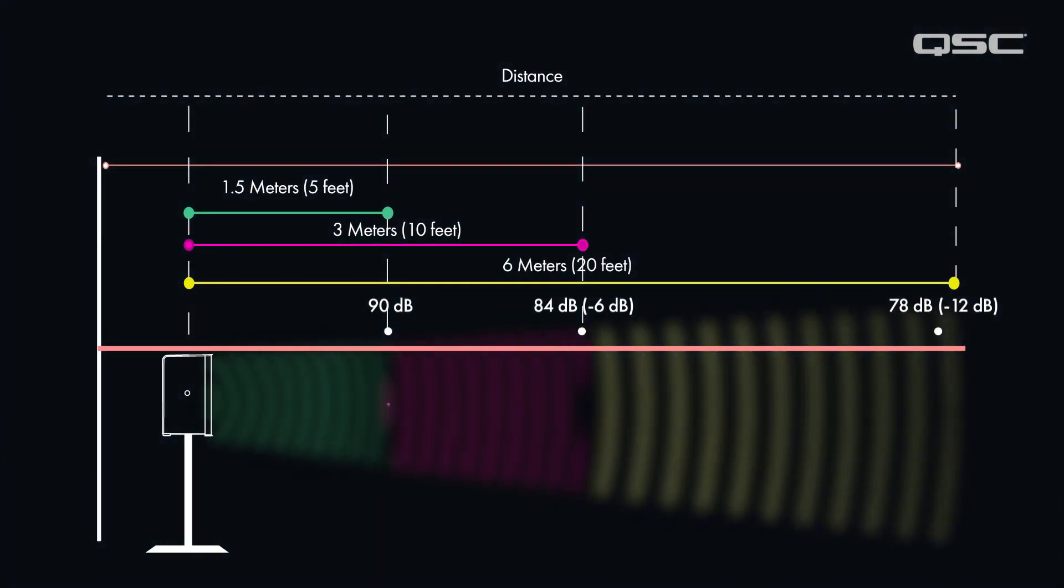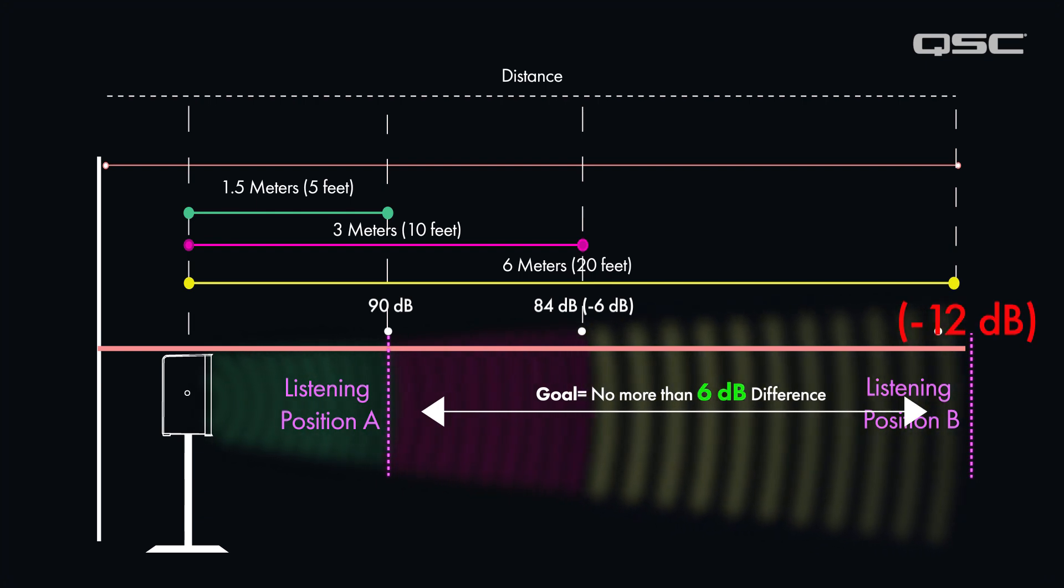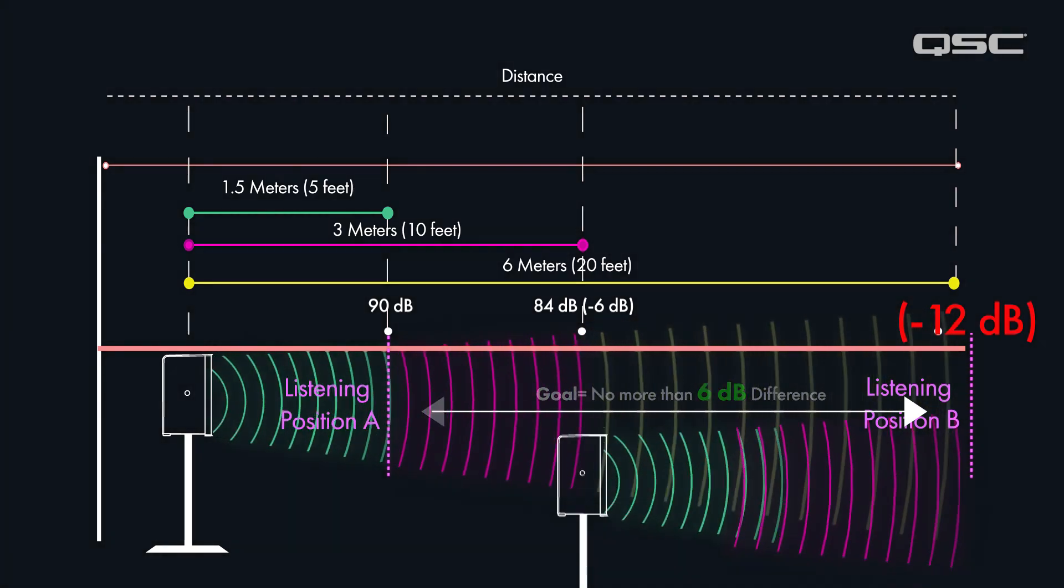Let's take the closest point covered by each loudspeaker and the farthest point covered. Now if the goal is to keep consistent audience coverage with no more than 6dB between the loudest and quietest points, you will need to place and orientate your loudspeakers accordingly.